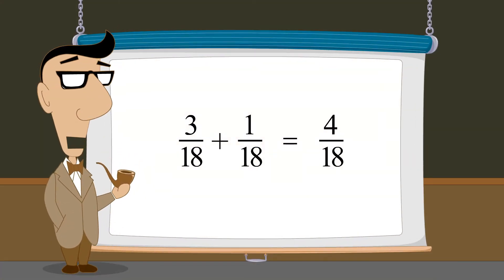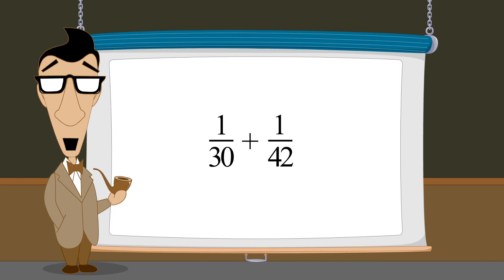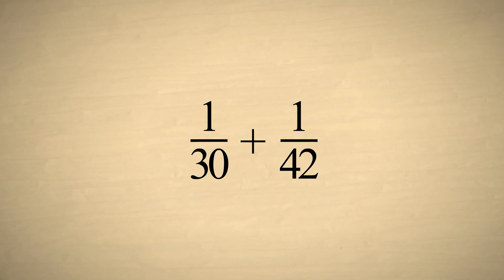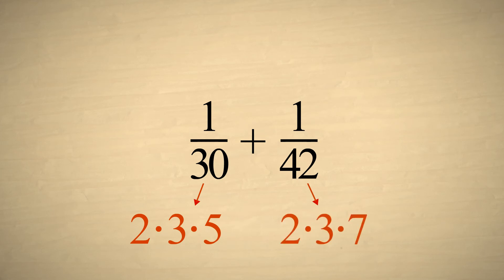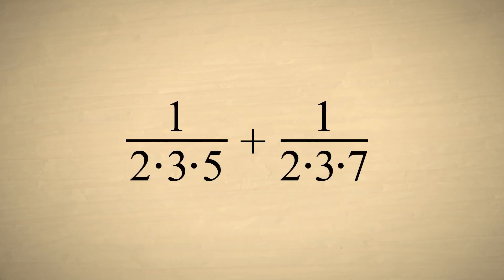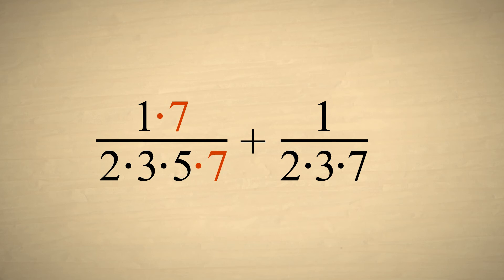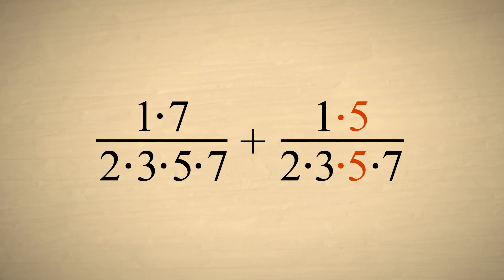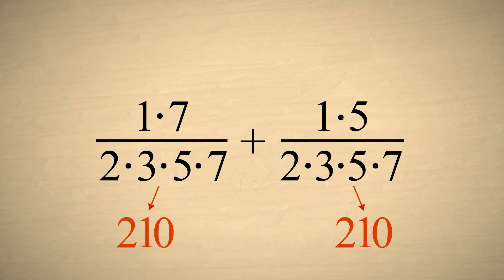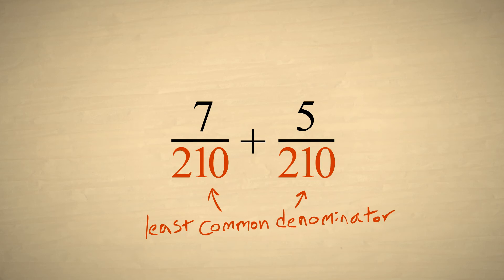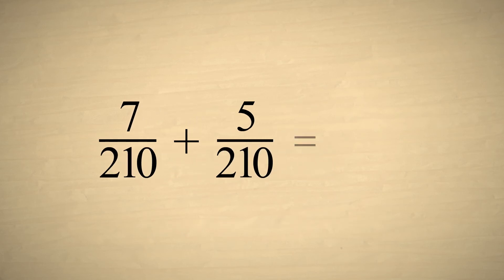Let's try another example: adding one-thirtieth plus one-forty-second. Factoring each denominator, we see that the first denominator needs a factor of seven that the second denominator has, and the second denominator needs a factor of five that the first denominator has. So we multiply the top and bottom of the first fraction by seven, and the top and bottom of the second fraction by five. The two fractions now have a least common denominator of two-hundred-ten, and we can now add their numerators.